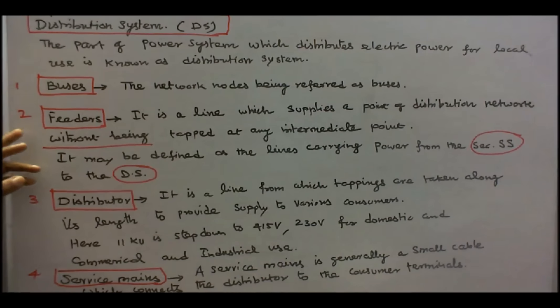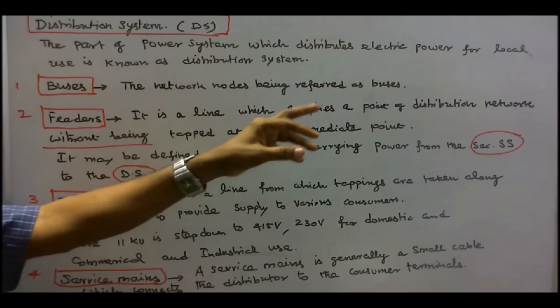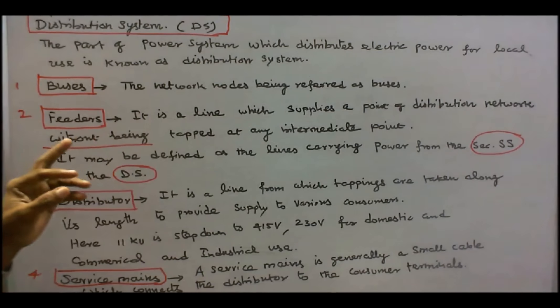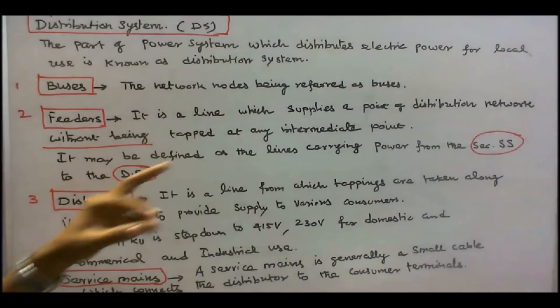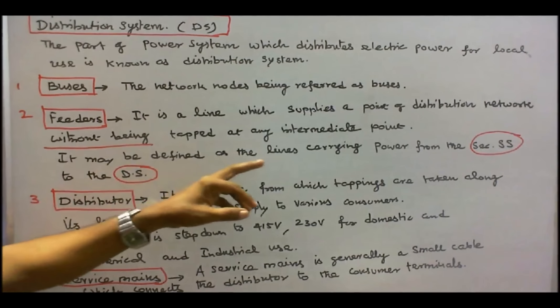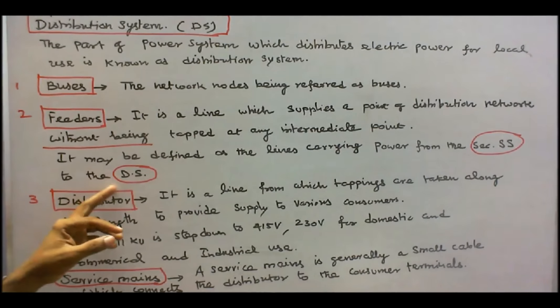Number two, feeders. It is a line which supplies a point of distribution network without being tapped at any intermediate point. Or, it may be defined as the lines carrying power from the secondary substation to the distribution substation.